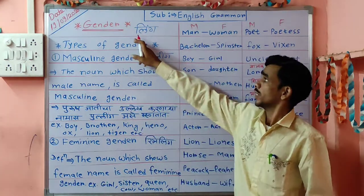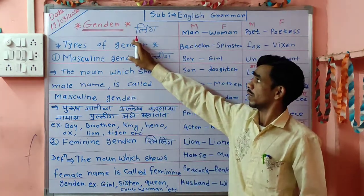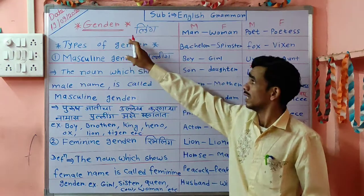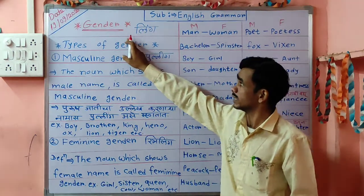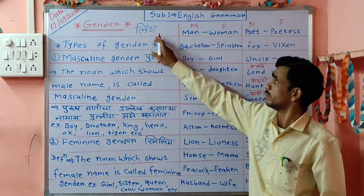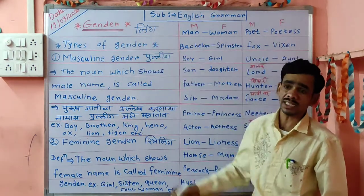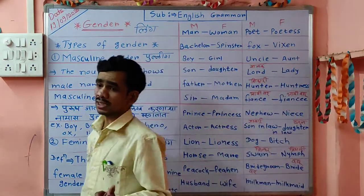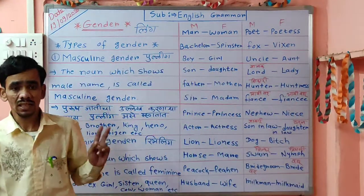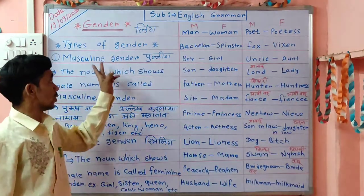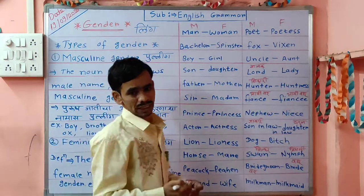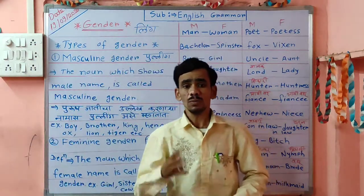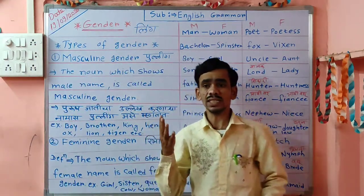We are going to see a new topic now. This is the most important topic and its name is gender. So gender means in Marathi, gender means lingam. There are 4 types of gender.